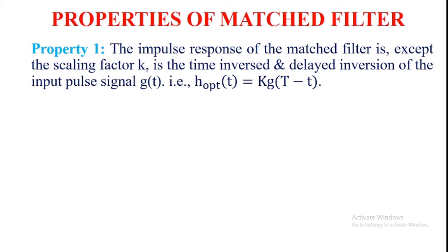That is, H_optimum(t) = k · g(T - t), where g(t) is the input signal, k is the scaling factor. The impulse response of the matched filter, except for the scaling factor k, g(T - t) is the time-inversed and delayed inversion of the input pulse signal. g(T - t) is the time-inversed input pulse signal or delayed inversion of the input pulse signal. That is the statement of property one. Now coming to the proof.